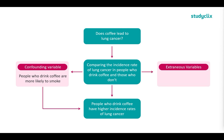We also have extraneous variables, which include things like family history — if lung cancer is in their genetics, they are more likely to develop it. Maybe there's a gender difference, or situational factors such as living with someone who smokes and being exposed to secondhand smoke. Extraneous variables — we can't predict what effect they've had and we don't know if they've had an influence. Our confounding variable, we know it has definitely had an effect, but we just can't separate it from our independent variable.